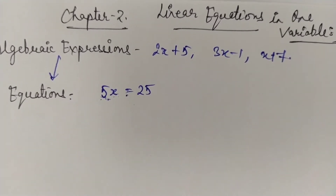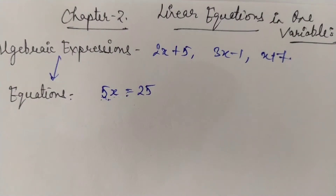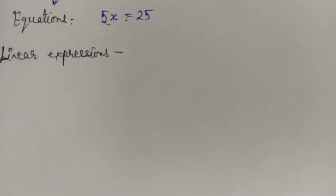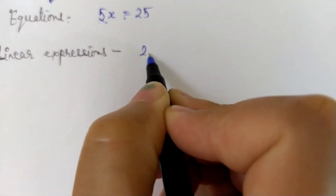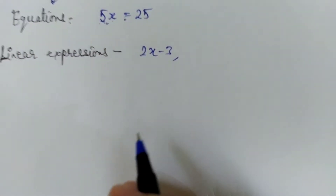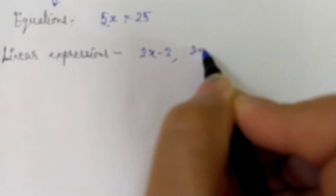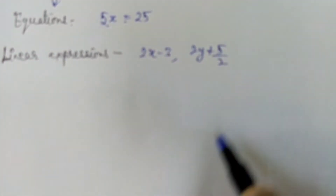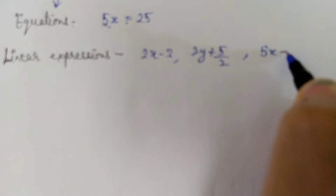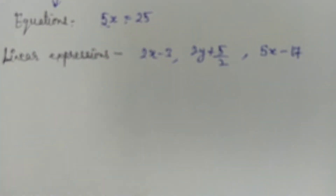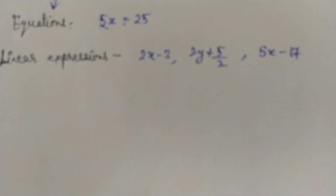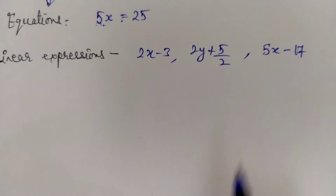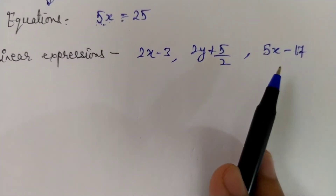There can be many variables — 2 variables, 3 variables — but that will come in higher standards. Now, for a linear equation in one variable, the expressions that are shown on the board — these are all linear expressions. The expressions you see written in this form are all linear expressions.